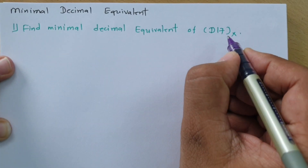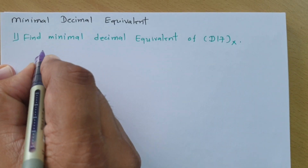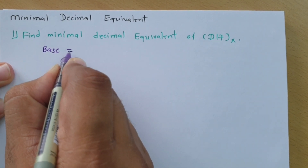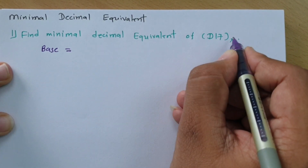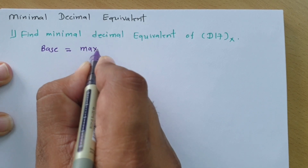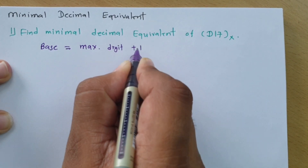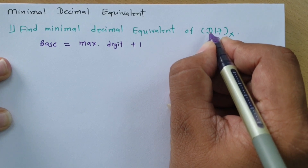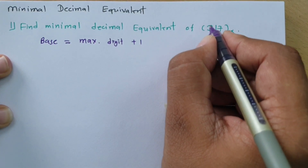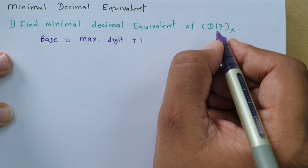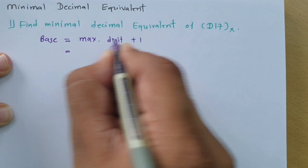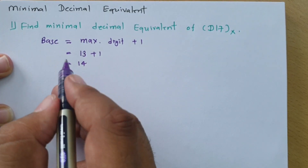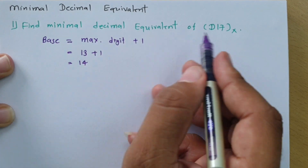The first step is identification of the base. To find the base for minimal decimal equivalent, take the maximum digit present in the number and add 1. Here, the maximum digit is D, which is equivalent to 13, and 13 plus 1 equals 14. So 14 is the base for the minimal decimal equivalent of this given number.